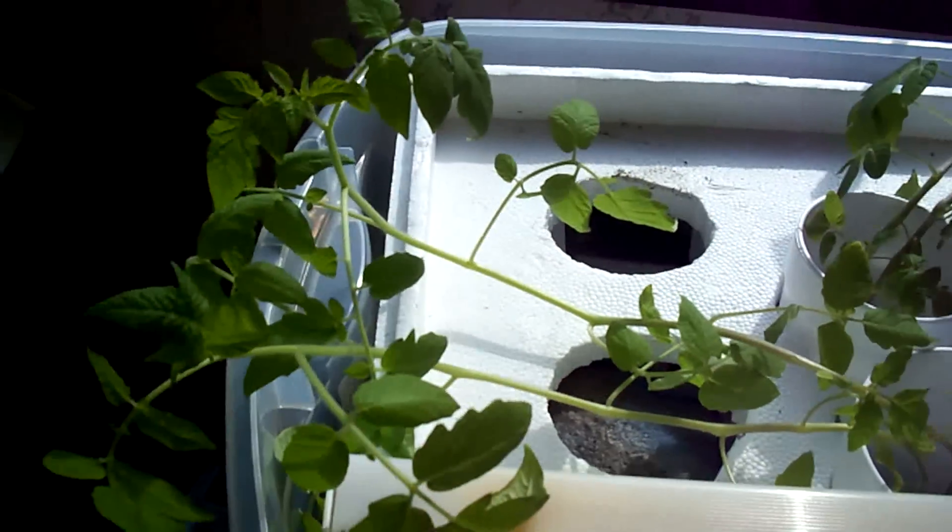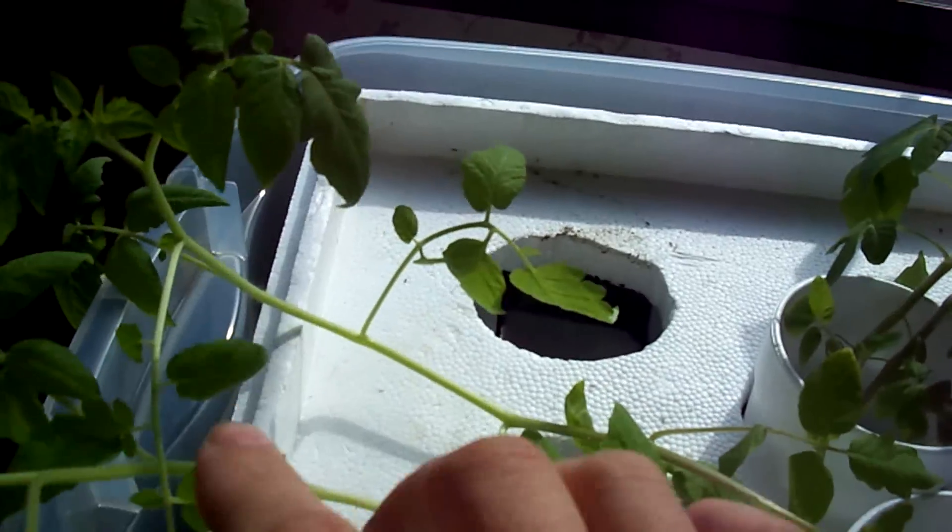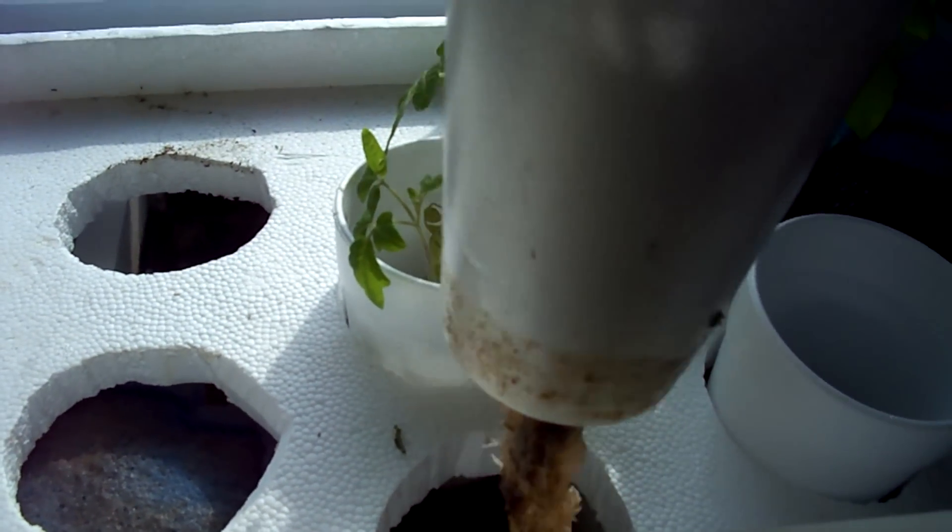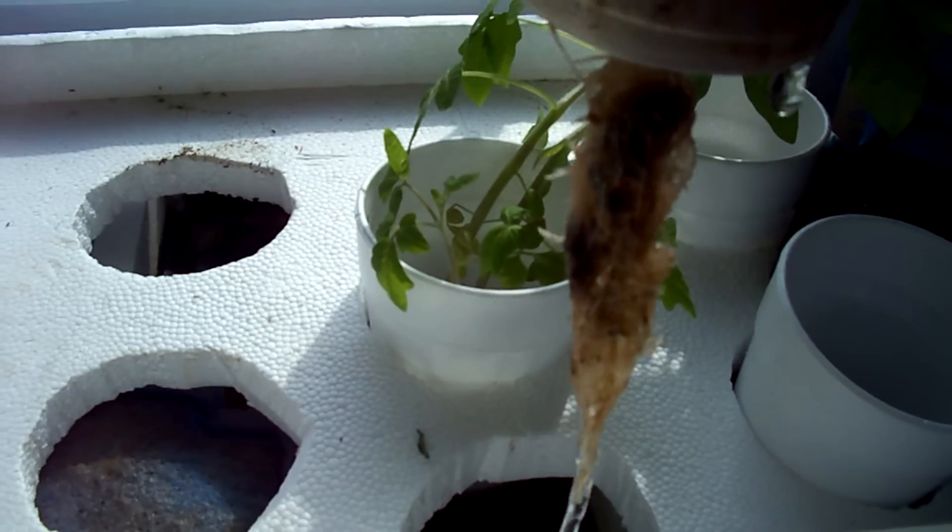This is my aquaponics setup. I've got tomato plants sitting in cups. I'll pull the cups up. You can see the roots hanging at the bottom.